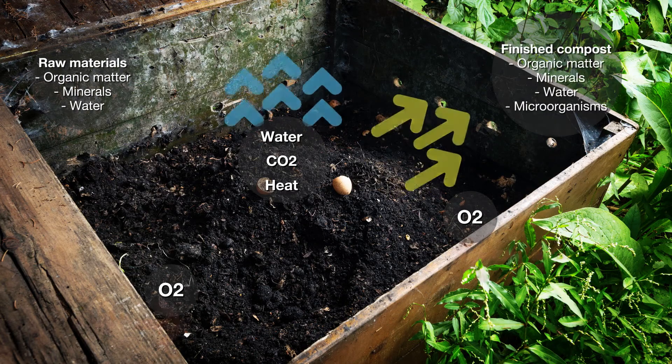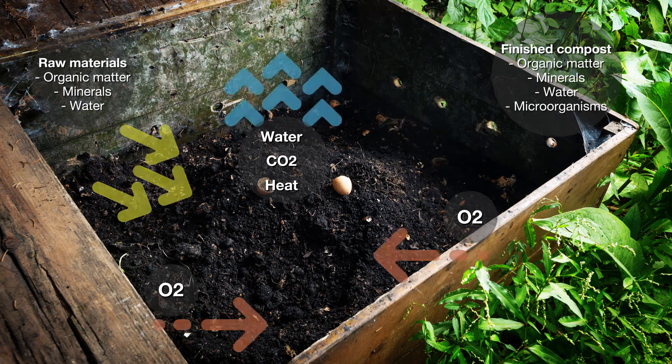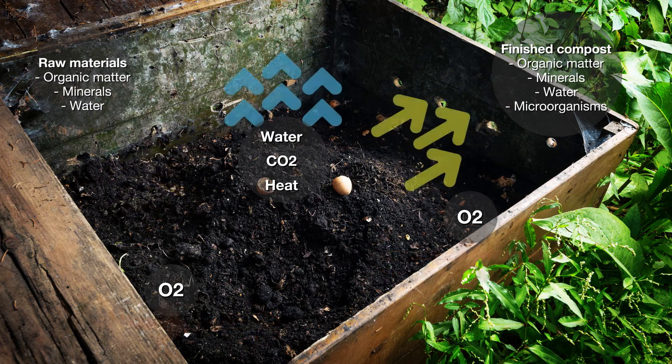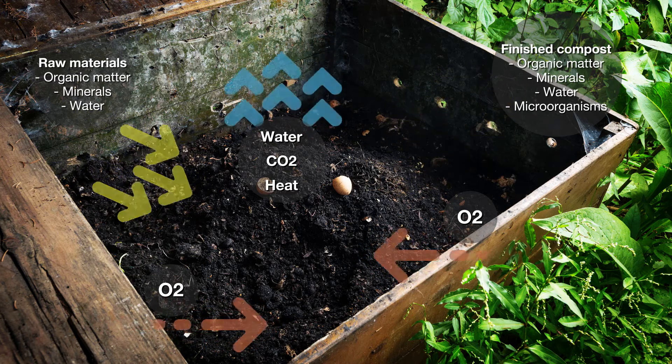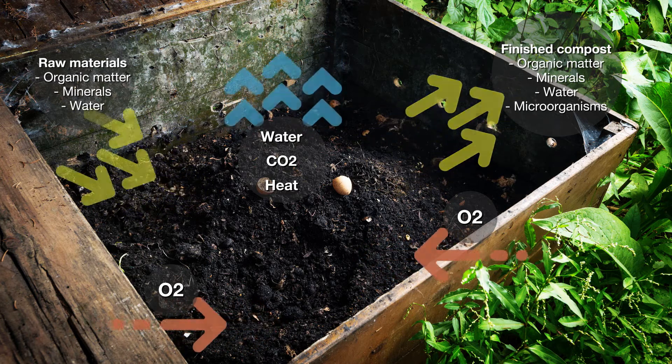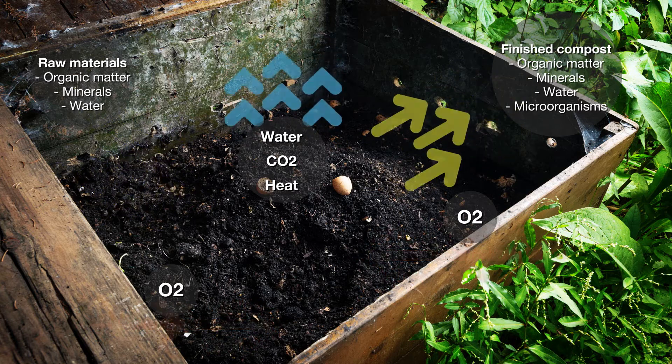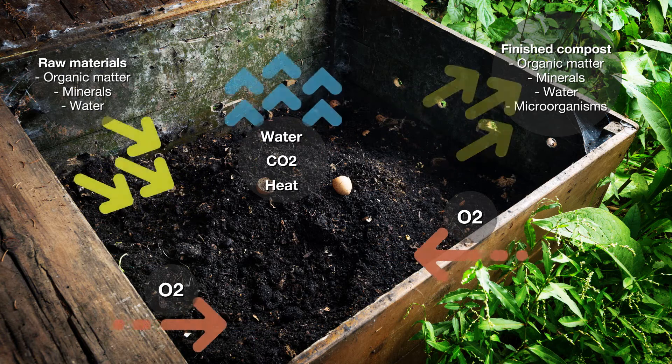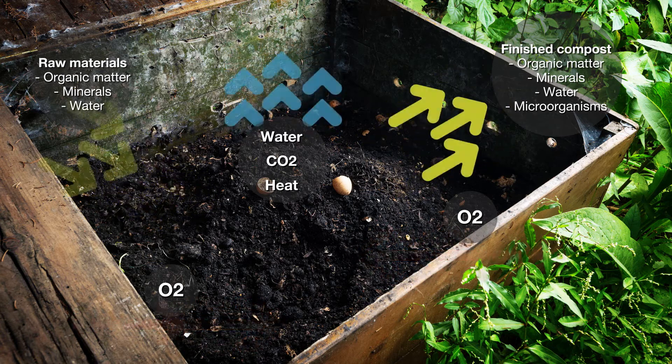The ISO Standard 14855 specifies a method for the determination of the ultimate aerobic biodegradability of plastics based on organic compounds under controlled composting conditions by measuring the amount of carbon dioxide evolved and the degree of disintegration of plastic at the end of the test.